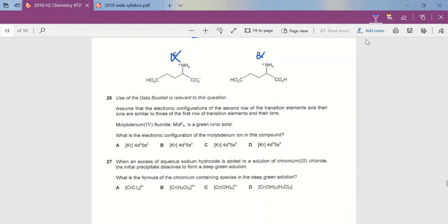All right, question 26. We are told that the use of data booklet is relevant, and we need to assume that electronic configuration of the first and second row of transition metal are similar. So this MOF4 is a green ionic solid. Take note that the oxidation number is +4 for MO.